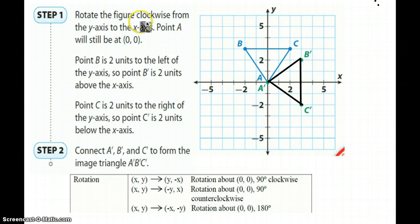He says step 1, rotate the figure clockwise from the y-axis to the x-axis. Point A will still be at (0,0). Point B is 2 units left of the y-axis, so B' will be 2 units above the x-axis. So what is he saying? If your ordered pair here is (-2,3), and then you rotate this thing 90 degrees clockwise, you would have y become your x and then take the opposite. So if that's 3, this becomes 3 for x as you can see, and then the opposite of -2 becomes a positive 2 for y.